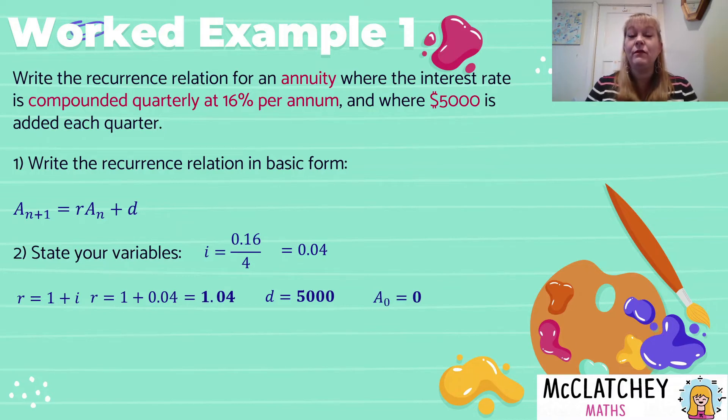Now we know something's being added because they told us it was an annuity. But if they didn't use that magic word annuity, you could also infer that by being told that the same amount of money is being added every period. That would also tell you it's an annuity and that you need to use this recurrence relation. So we're going to write the basic form first. That's straight from our formula sheet. It's always a good idea to write the formula. Sometimes you earn marks for selecting the correct formula. This could be that situation. So always do that. Never take a shortcut. And then we should always state our variables.